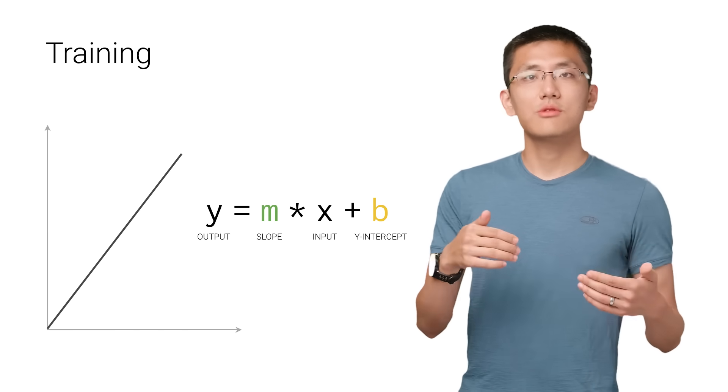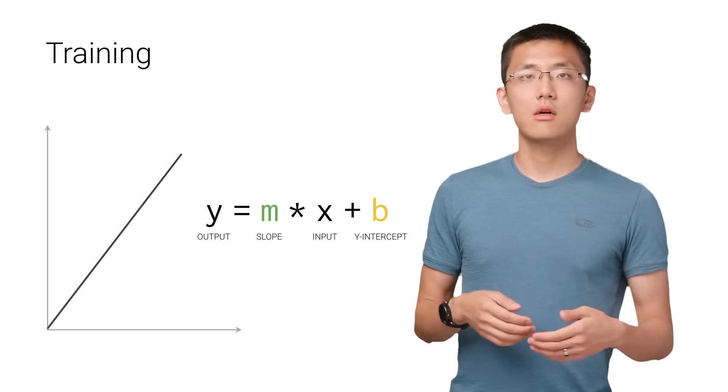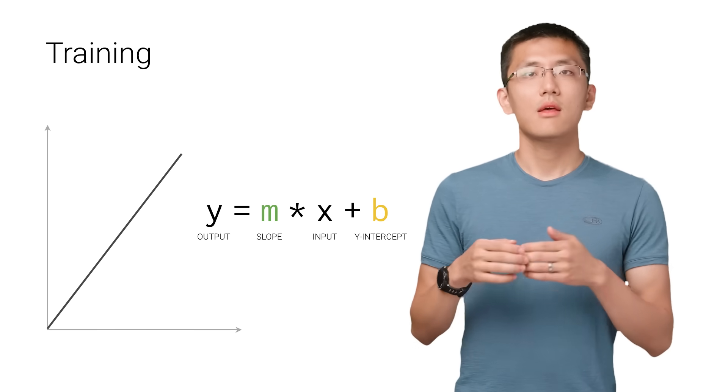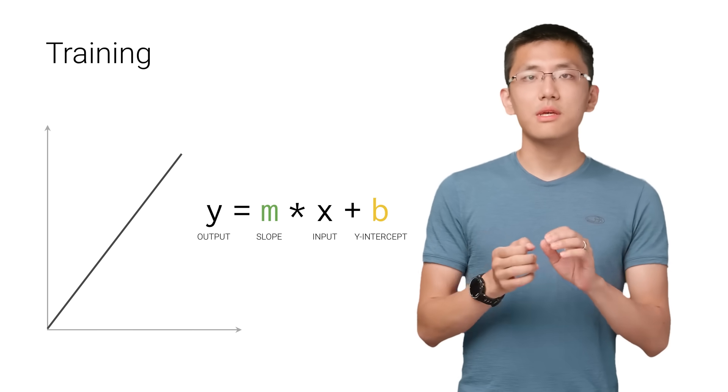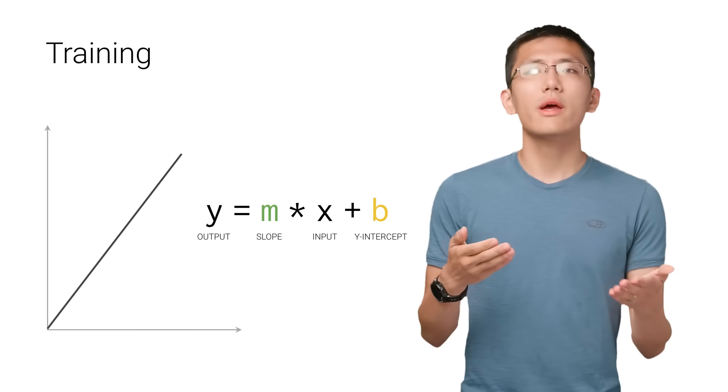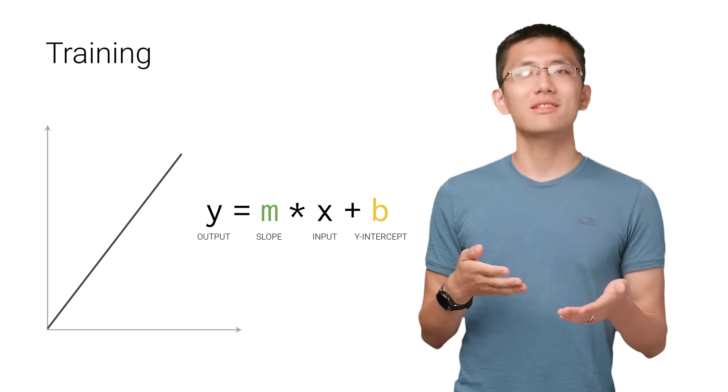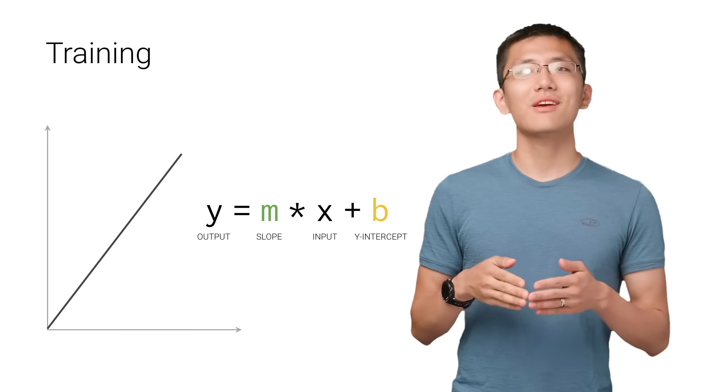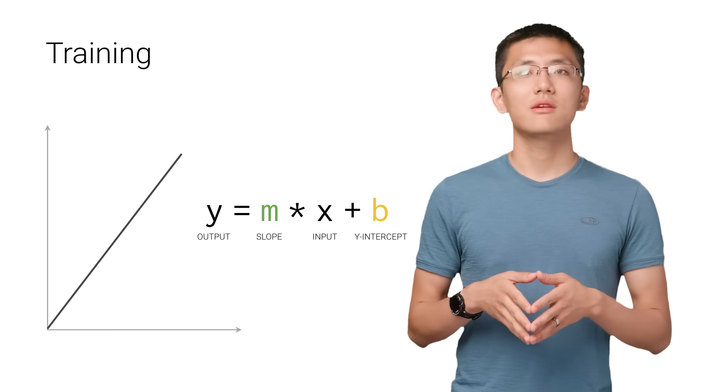The values we have available to us to adjust or train are just m and b, where m is that slope and b is the y-intercept. There's no other way to affect the position of the line, since the only other variables are x, our input, and y, our output.